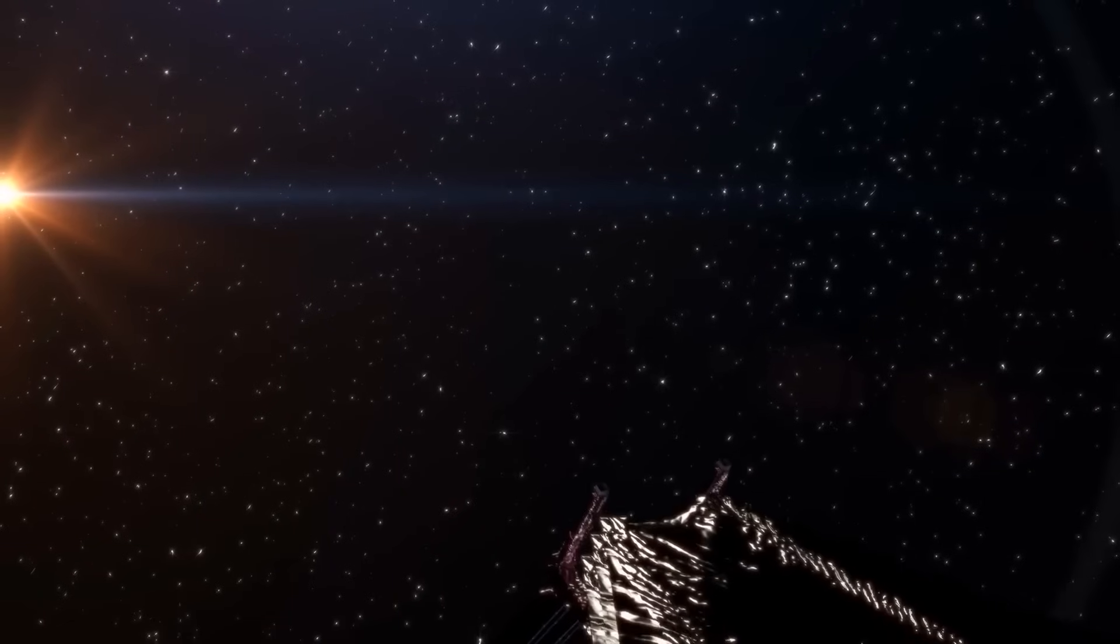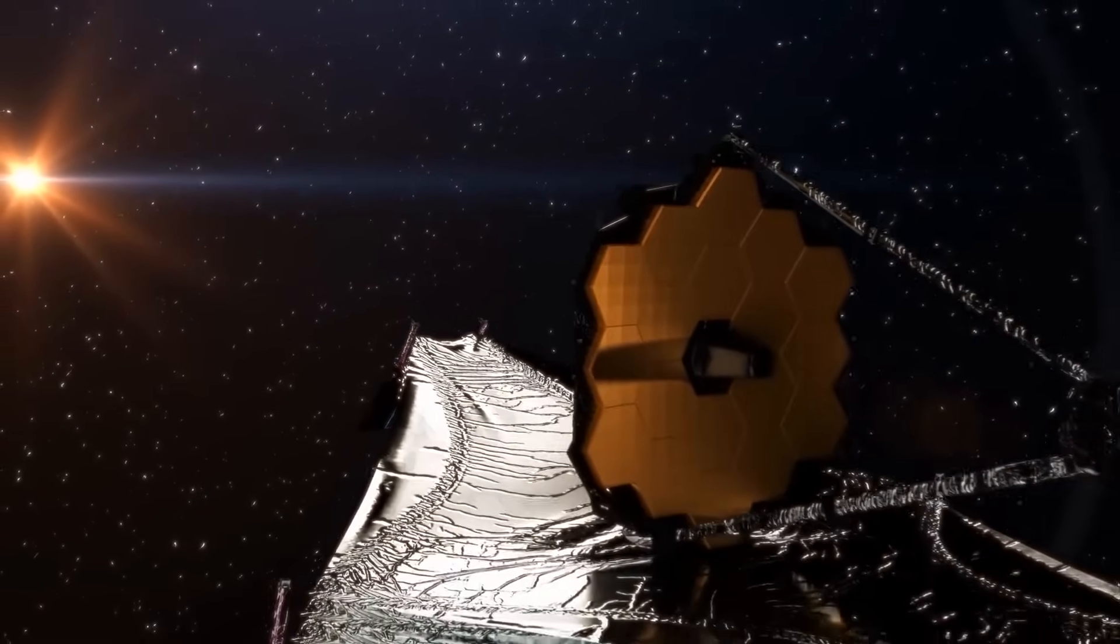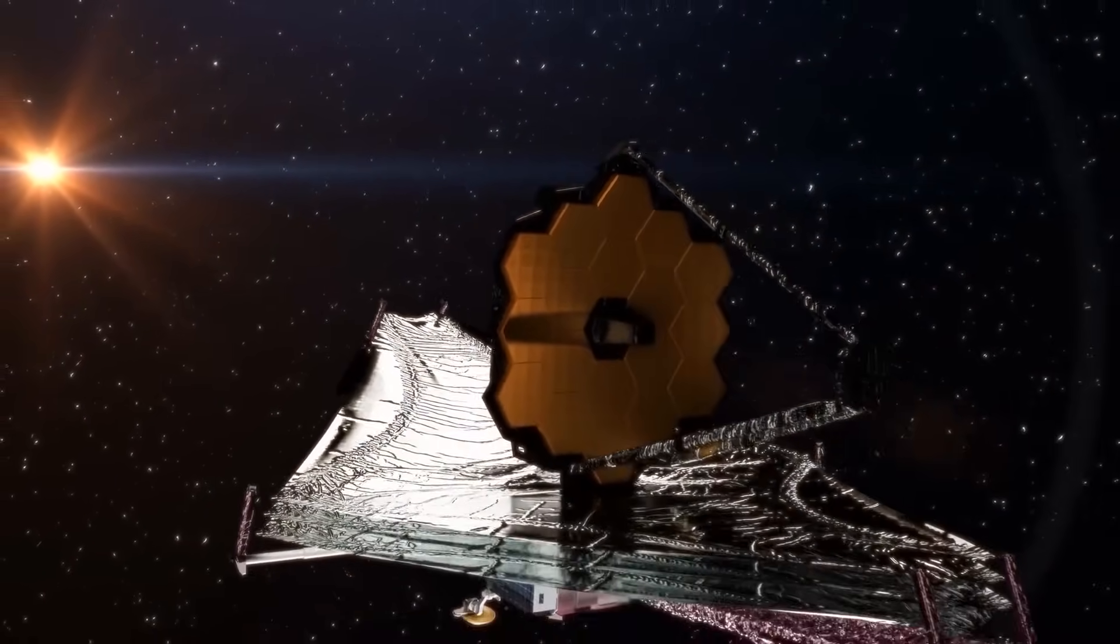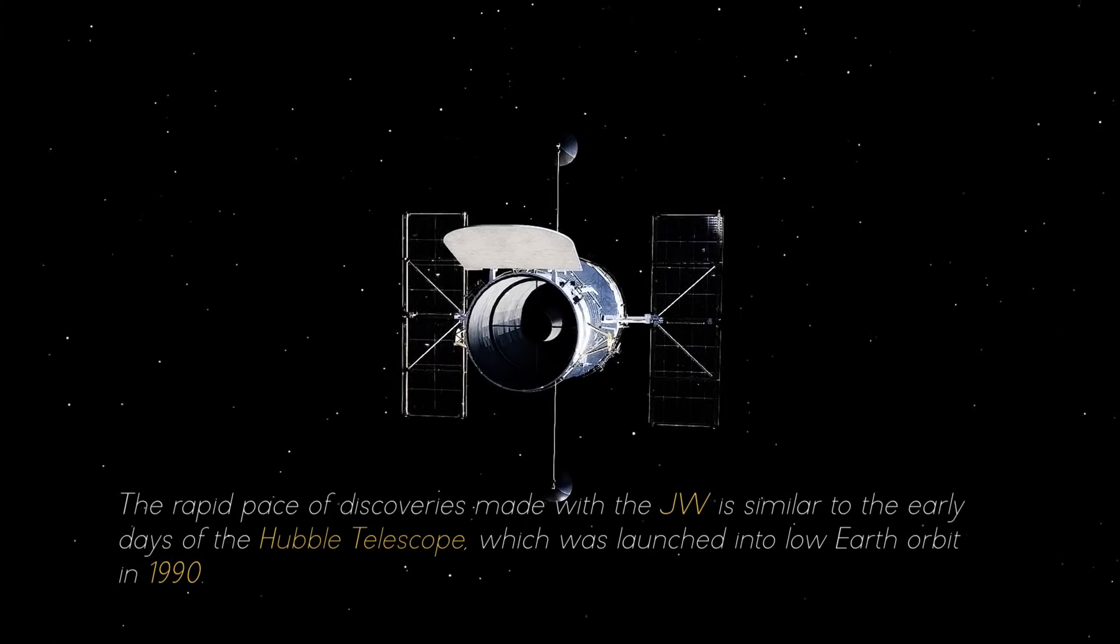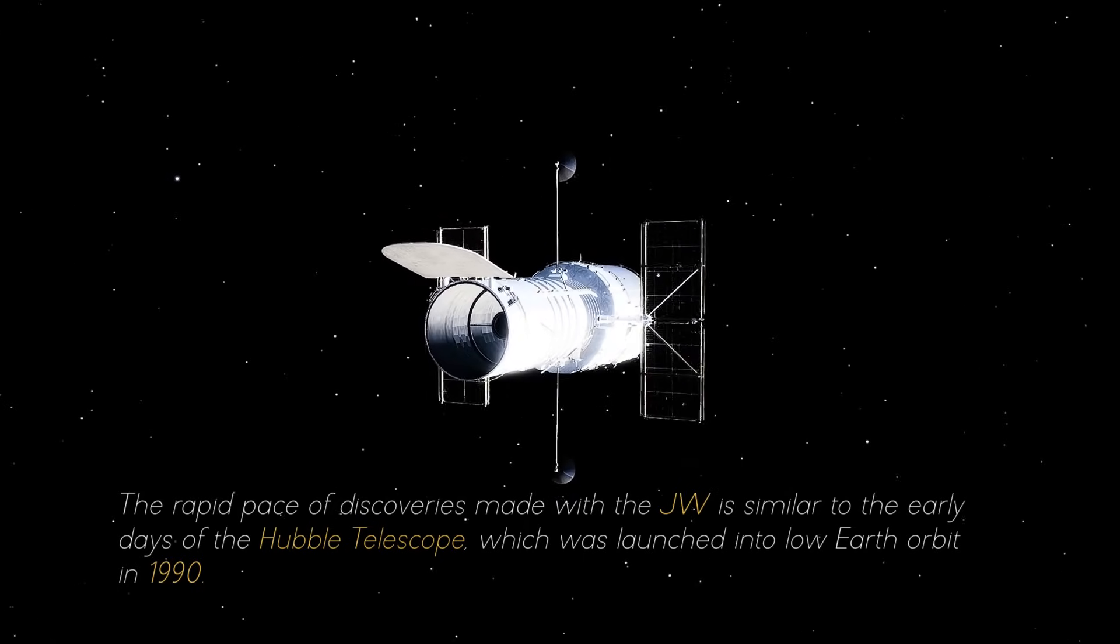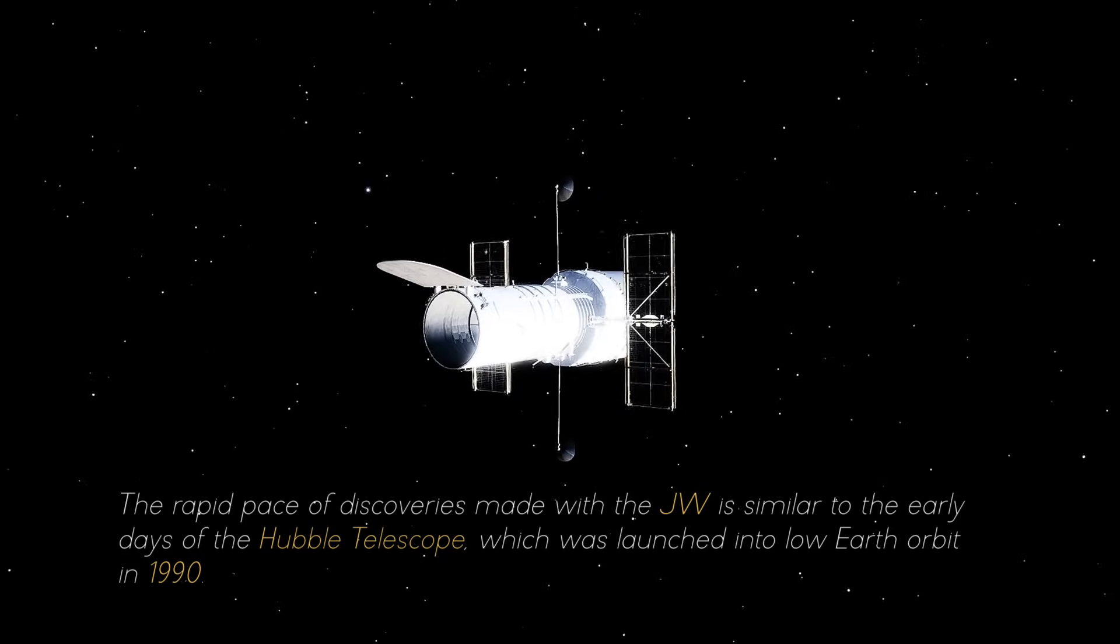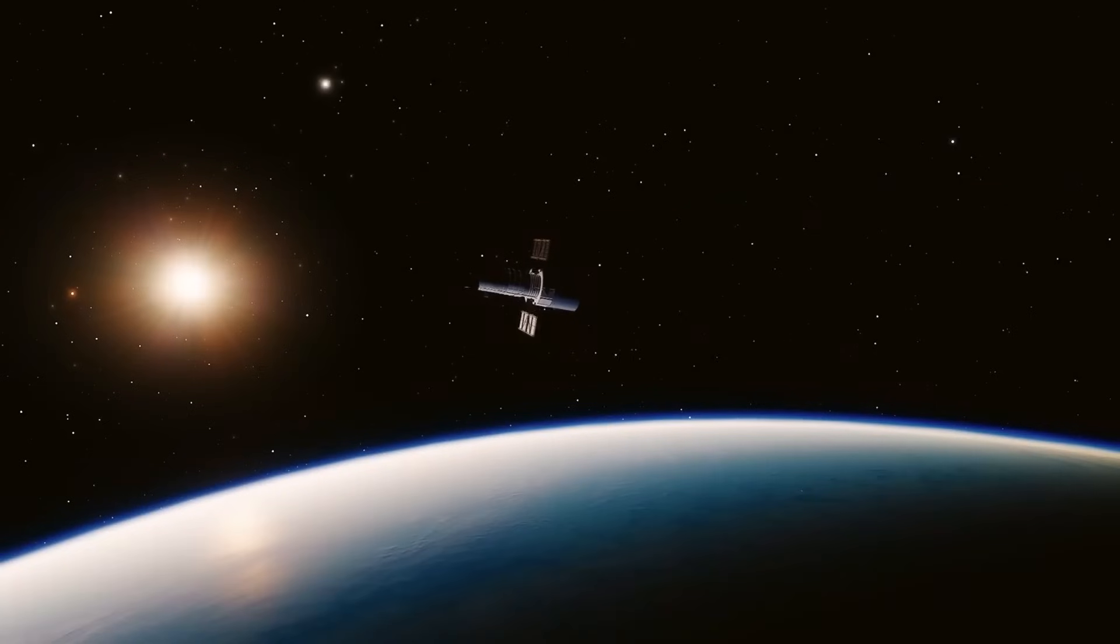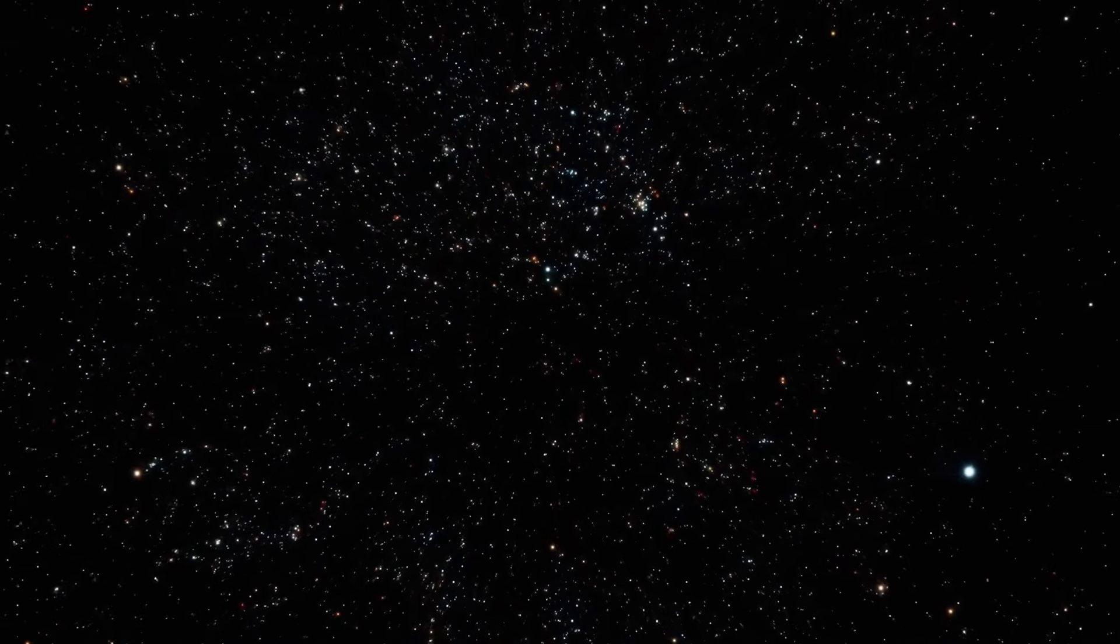In the meantime, preliminary observations offer persuasive insight into how the JWST could ultimately rewrite our understanding of the universe. The rapid pace of discoveries made by the JWST is similar to the early days of the Hubble telescope, which was launched into low Earth orbit in 1990. The Hubble Space Telescope quickly began to provide a much more complex picture of the early universe than researchers had initially anticipated.